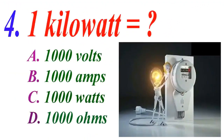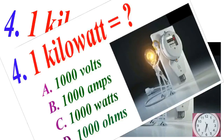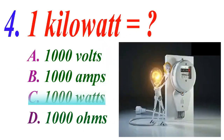1 kilowatt is equal to: A 1000 volt, B 1000 ampere, C 1000 watts, D 1000 ohms. The correct answer is C, 1000 watts.